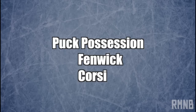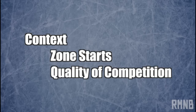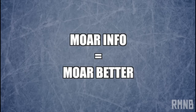There are measurements of puck possession like Fenwick and Corsi, there are ways to weigh randomness and luck like PDO, and there's information about the context in which players are playing, like quality of competition and zone starts. These stats give us more and better information about players and teams.